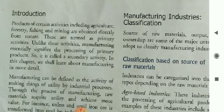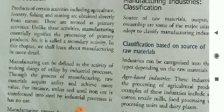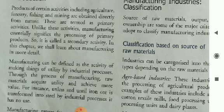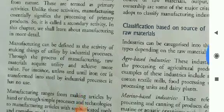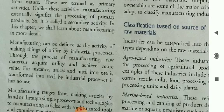Introduction: products of certain activities including agriculture, forestry, fishing and mining are obtained directly from nature. These are termed as primary activities.